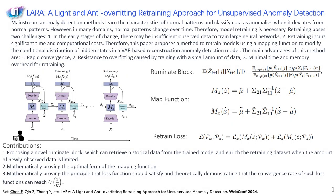Mainstream anomaly detection methods learn the characteristics of normal patterns and classify data as anomalies when it deviates from normal patterns. However, in many domains, normal patterns change over time. Therefore, model retraining is necessary.